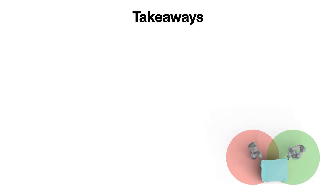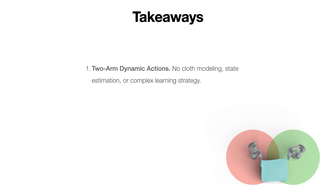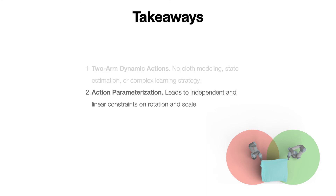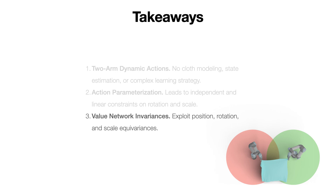We've presented FlingBot, a self-supervised algorithm which learns to unfold cloths with a pick, stretch, and fling primitive for a dual-arm setup. Perhaps most surprisingly, even without explicit modeling of cloth states or any complex learning strategy, FlingBot is able to perform so well. The simplicity of our approach demonstrates the effectiveness of two-arm dynamic actions for cloth unfolding. Our action parameterization leads to independent and linear constraints on grasp line rotations and scales, and allows us to learn value networks which exploit translational, rotational, and scale equivariances of the problem structure.